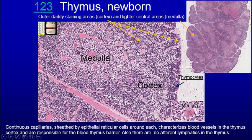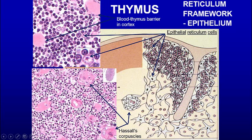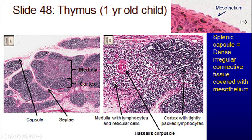This happened to be from a newborn — you see one lobe with a cortex and a medulla. There are various lobes, each with cortex and medulla. You have continuous capillaries with an endothelial cell, but you also have the epithelial reticulum cells that surround them to help maintain the barrier and gobble up anything that may pass through. In the medulla, we have Hassall's corpuscles, which are a degradated structure given rise to by the reticulum cells.